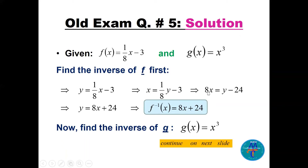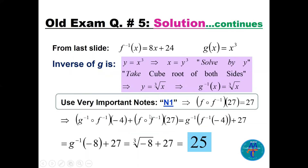The function f is a straight line: f(x) = (1/8)x − 3. Finding f⁻¹ by interchanging x and y gives f⁻¹(x) = 8x + 24. For g(x) = x³, we find g⁻¹(x) = ∛x. Now: f⁻¹(−4) = 8(−4) + 24 = −32 + 24 = −8. Then g⁻¹(−8) = ∛(−8) = −2. So the answer is −2 + 27 = 25.